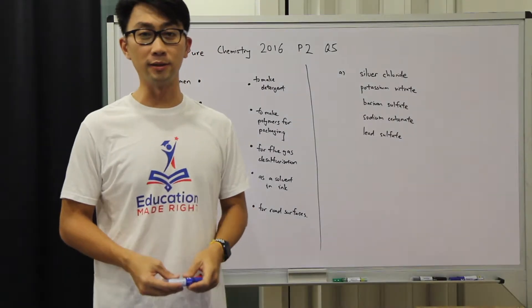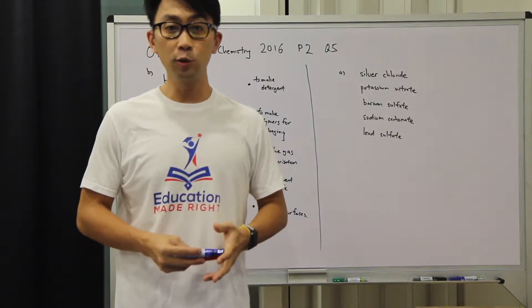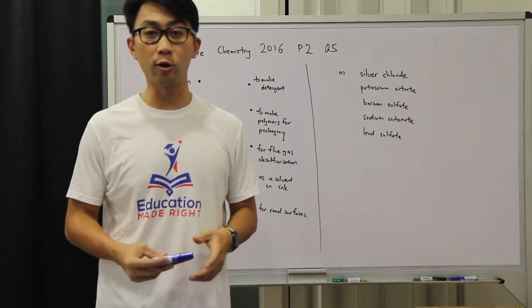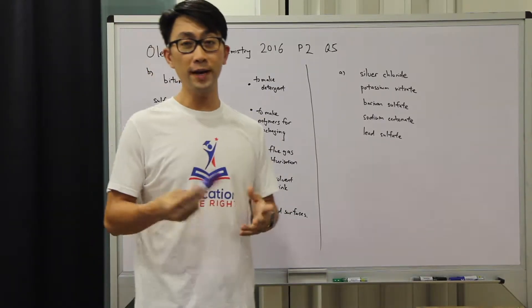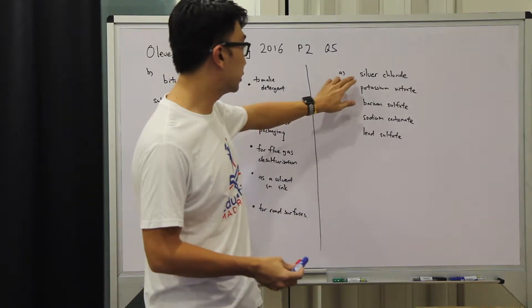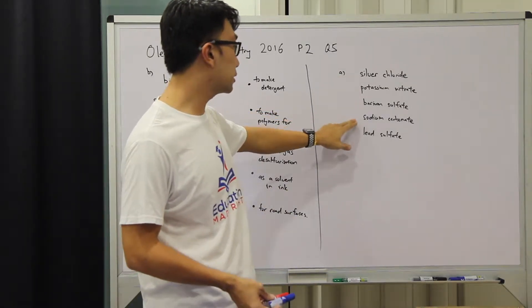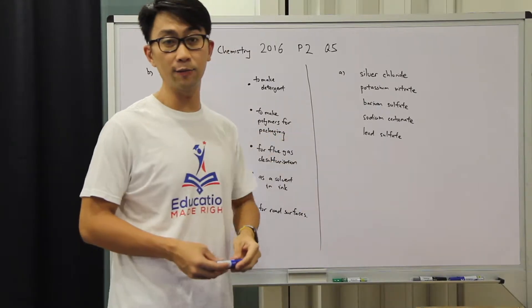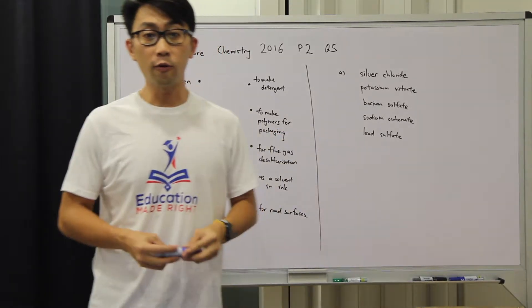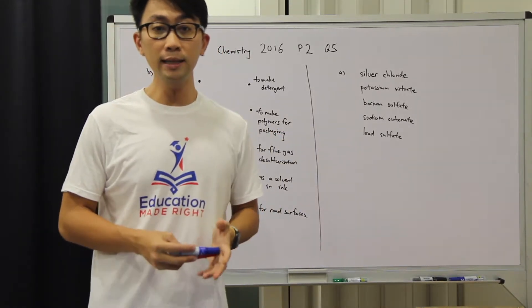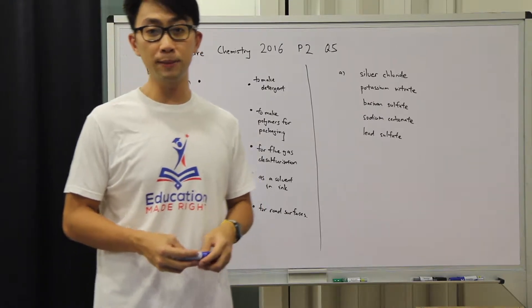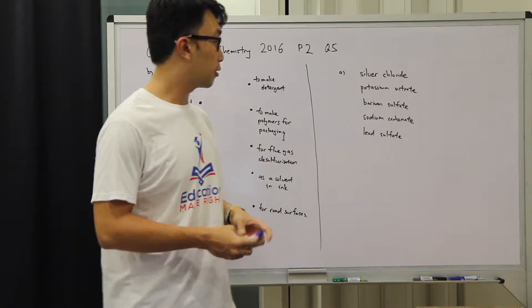Let us first have a look at the question. The table shows some salts and products that contain them. We have got 5 salts in the table: silver chloride, potassium nitrate, barium sulphate, sodium carbonate and lead sulphate. For part A, which salts in the table can be made by precipitation reactions?